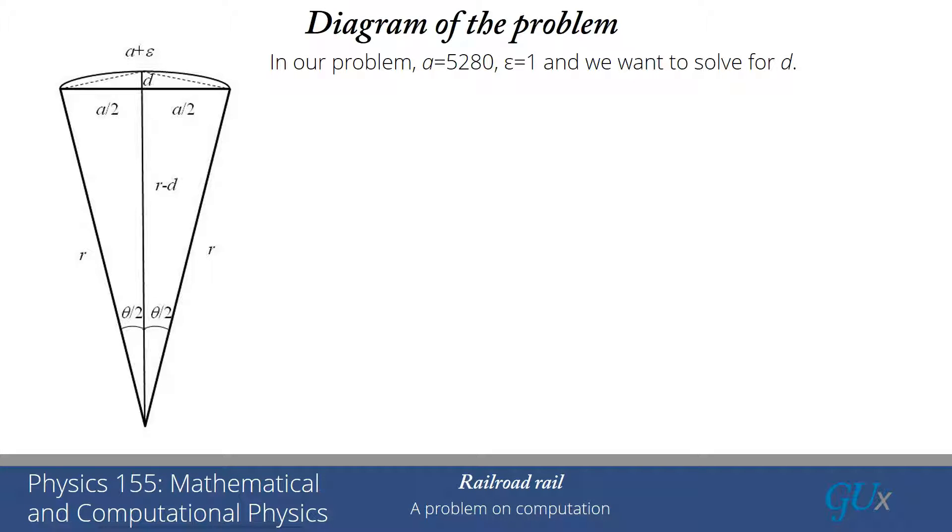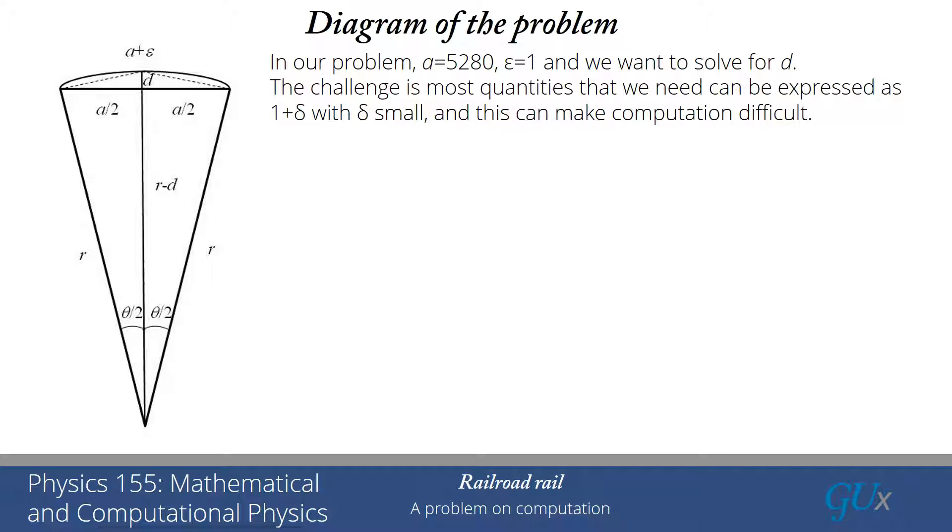The challenge that we're going to find is not in the geometry or the trigonometry. It's that because R is very big and epsilon is small, many of the quantities we're going to deal with are of the form 1 plus delta, where delta is a small number. And this can make computation difficult because we can lose precision in digits as we do our calculations.